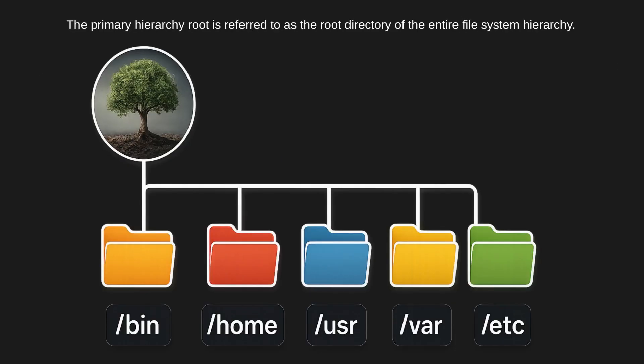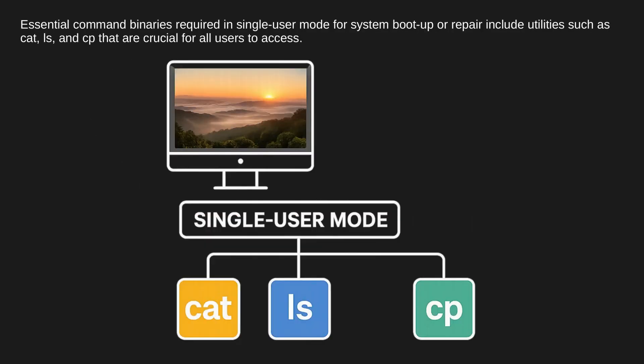The primary hierarchy root is referred to as the root directory of the entire file system hierarchy. Essential command binaries required in single-user mode for system boot-up or repair include utilities such as CAT, LS, and CP, that are crucial for all users to access.